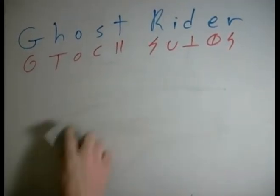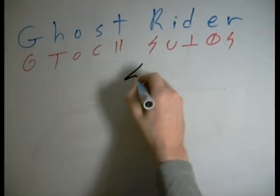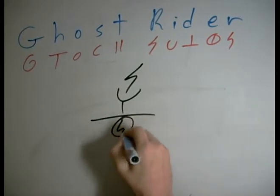Let's look at Rider now, quickly. Okay. Rider. R, I, D, E, R.